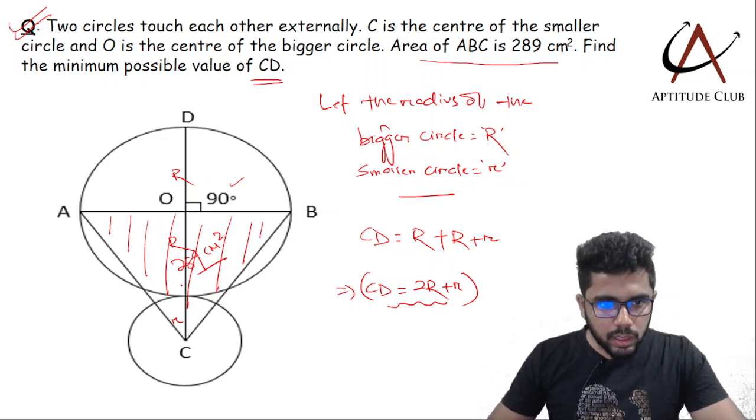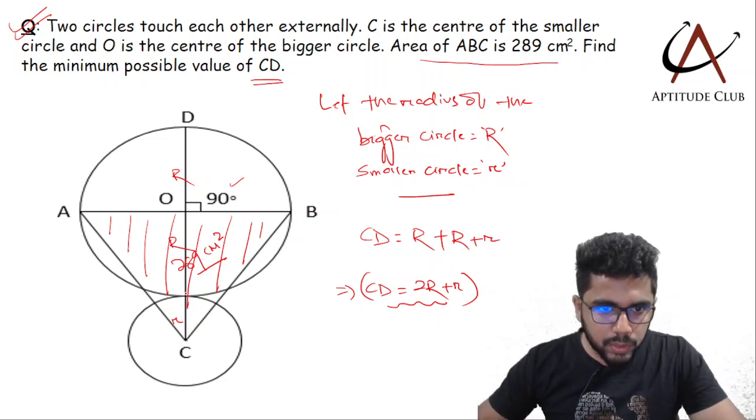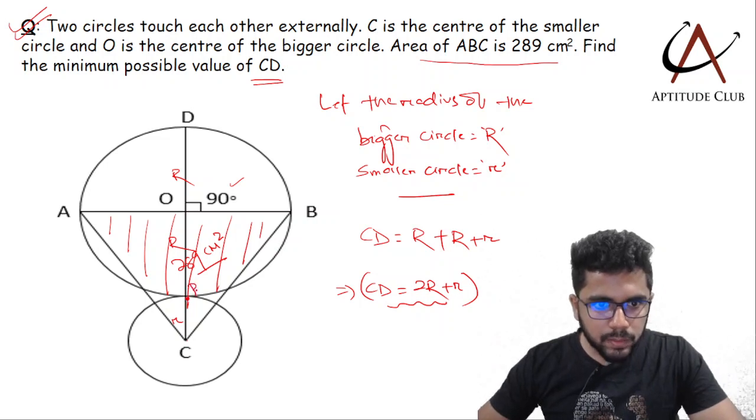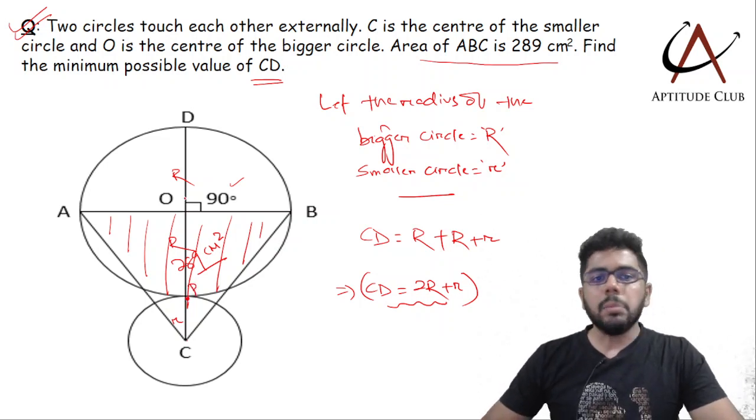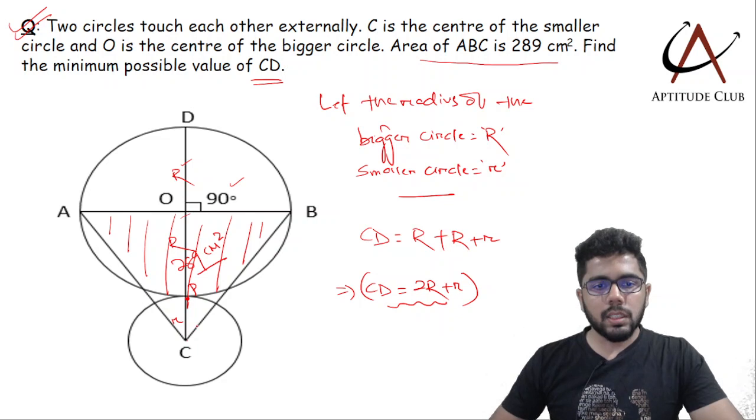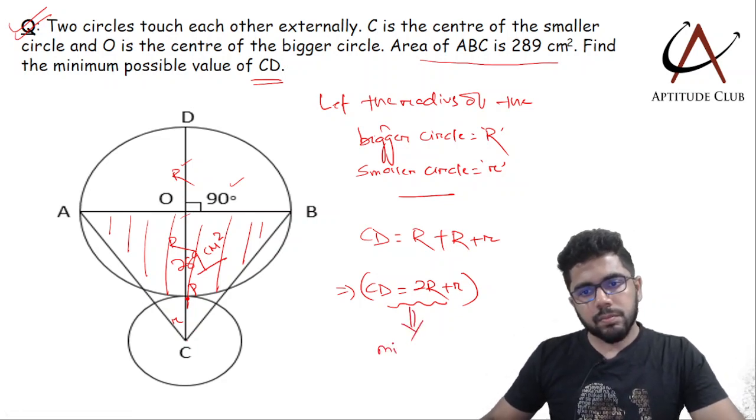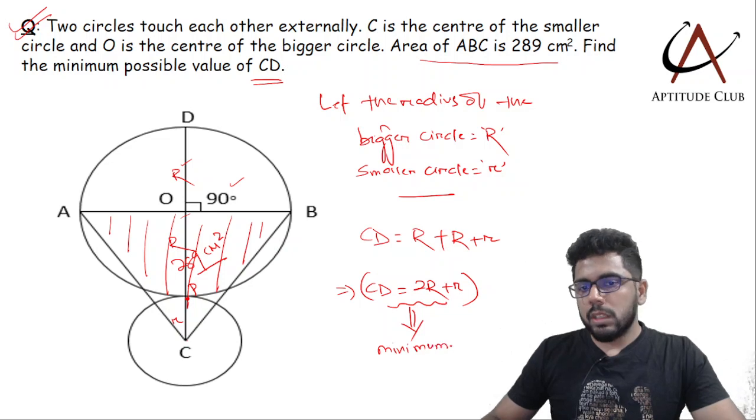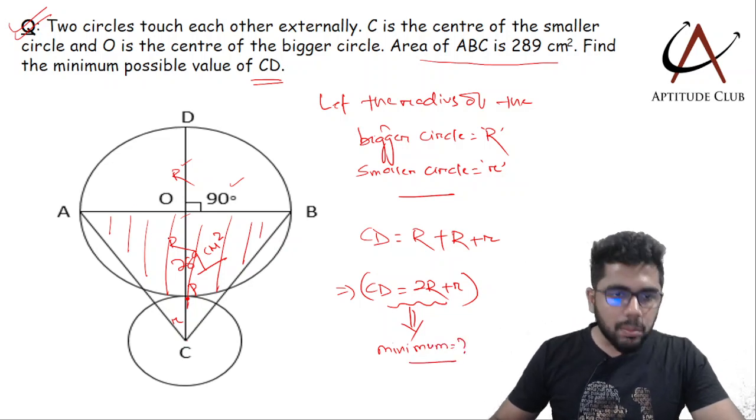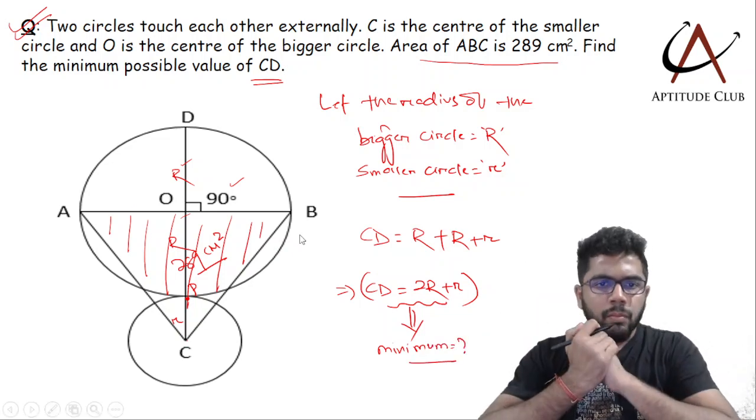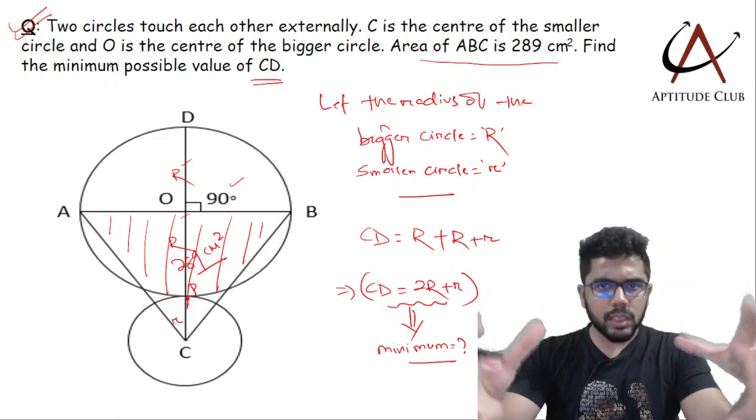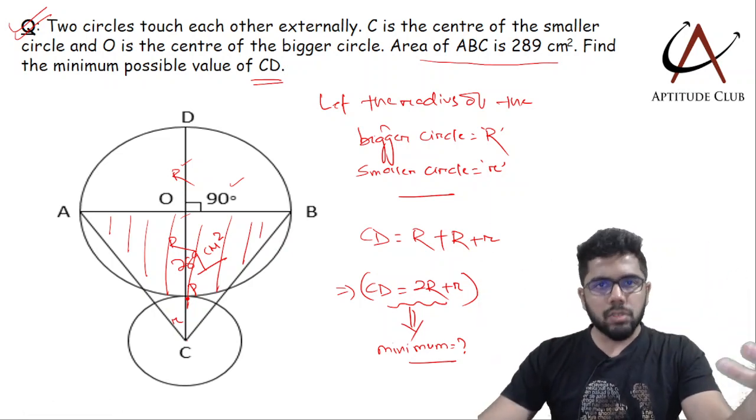Because if I take this point as P, then PD is the diameter, so this becomes R plus R plus r. Our objective is to minimize this. This is what the question is asking. We have been given the area of the triangle. Information wise, quite crisp and short, not too much to start with.